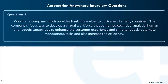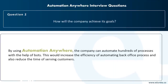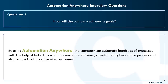Consider a scenario of a banking company that provides services in many countries. The company's goal is to develop a virtual workforce combining cognitive, analytic, human, and robotic capabilities to enhance customer experience, automate monitoring tasks, and increase efficiency. The answer is to use an RPA tool — specifically Automation Anywhere. By using Automation Anywhere, the company can automate hundreds of processes with the help of bots.